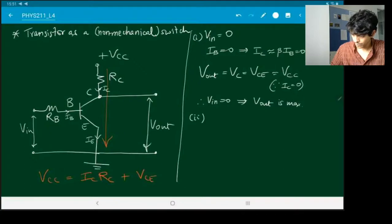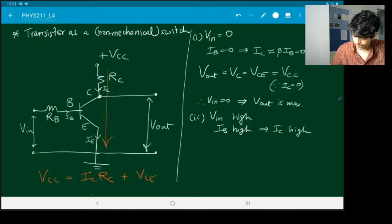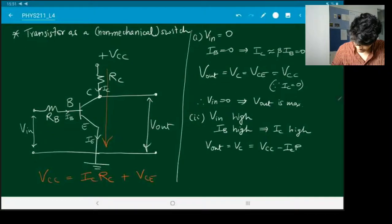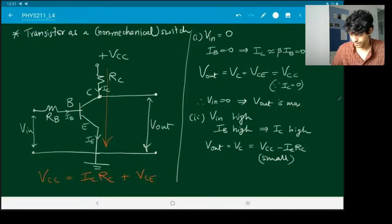And let's look at the other way. What happens if Vin is not zero but it has some high value that I give it? Well, if Vin is high, then there will be a high current passing through it. So then Ic also becomes high. And now Vout which is Vc is Vcc minus Ic Rc which is small because Ic is large. So Vin high implies Vout low.